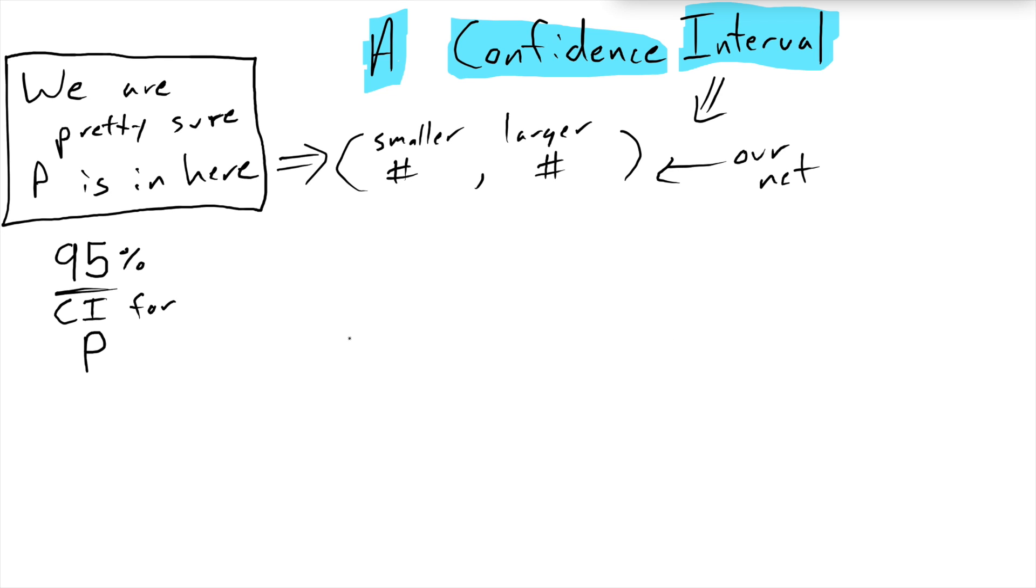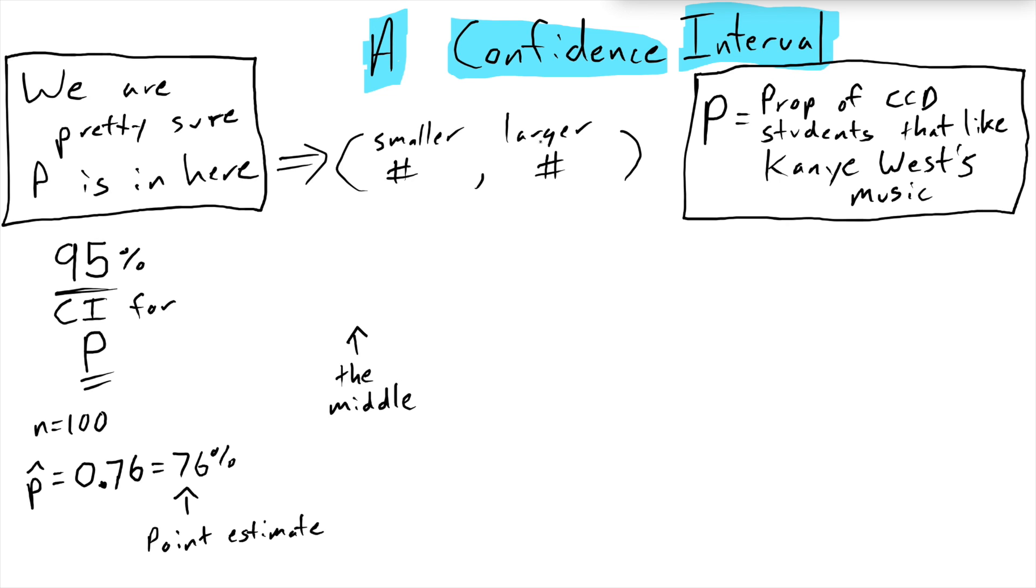So let's talk about where this 95% confidence interval is going to come from. It's not going to be zero to 100%. So the way we make these things is we start out with a point that's going to be right in the middle. Remember that we're trying to estimate the population proportion here. And how did we do that? We asked 100 students and we got 76 out of 100 or 0.76 of them say that they did like Kanye West's music. So we're trying to throw a net out to catch this fish here to estimate this parameter. And so where do we want to throw our net? Let's throw it at our best guess at what this parameter is. And what's our best guess of that? It's p hat.